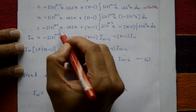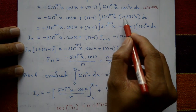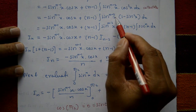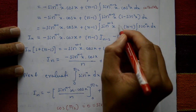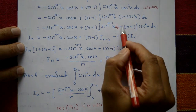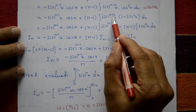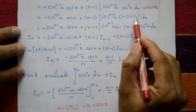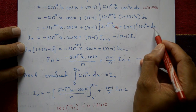Opening the bracket: Iₙ = −sinⁿ⁻¹x · cosx + (n−1)∫sinⁿ⁻²x dx − (n−1)∫sinⁿ⁻²x · sin²x dx. The last integral simplifies: sinⁿ⁻²x · sin²x = sinⁿx, so the last term becomes −(n−1)∫sinⁿx dx.